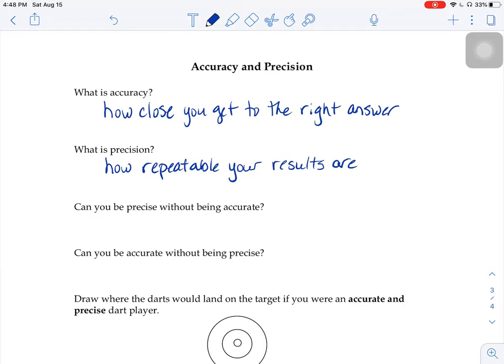Which leads to our next question. Can you be precise without being accurate? You betcha you can. Yep. You can get the same wrong answer over and over again. Maybe that's happened to you in math class before, where you keep trying a math problem and you get the wrong answer, and you try again and you get the wrong answer. You're precise if you keep getting the same results over and over again. You're just not accurate.